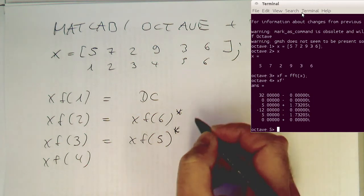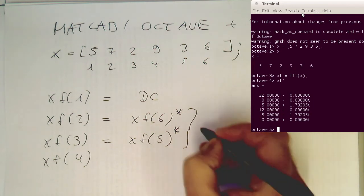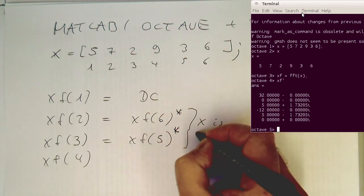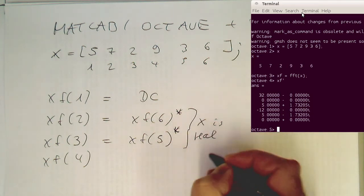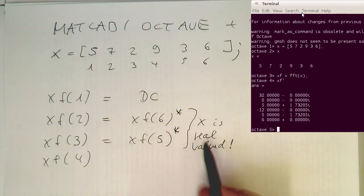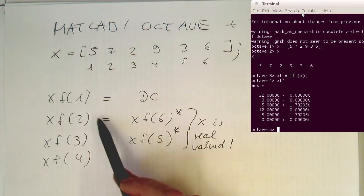So why is that the case here that we have this? This is because X is real or real valued. Yeah, so remember this, what we've proven a couple of lectures before or sections before, that if X is real valued, we are getting basically the mirrored version here.